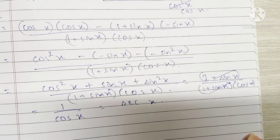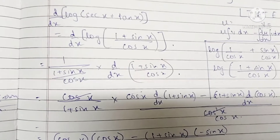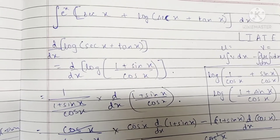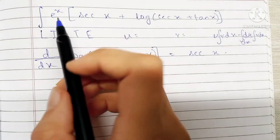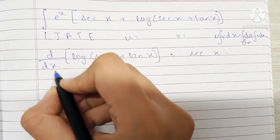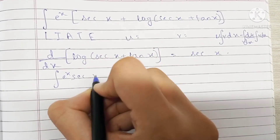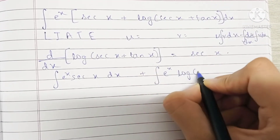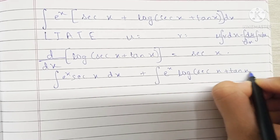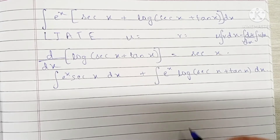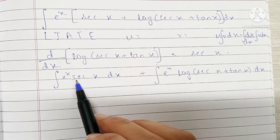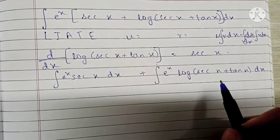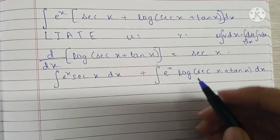We have made an important observation: the differentiation of log(sec x plus tan x) is sec x. This will help us when we use the by parts rule. Now let's write this integral as two separate integrals: e raised to x sec x dx, plus e raised to x log(sec x plus tan x) dx. We will be solving this integral by parts and using the by parts rule, placing the log(sec x plus tan x) term as u.